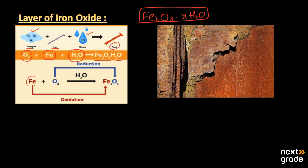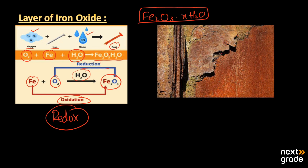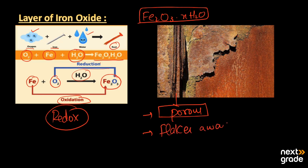When iron reacts with oxygen, this process is called oxidation. Oxygen and water together form iron oxide, making this reaction a redox type reaction. The layer of iron oxide formed over its surface is a very soft and porous layer. It does not stick to the metal surface; instead it flakes away from the surface and exposes the underlying surface for further rusting.